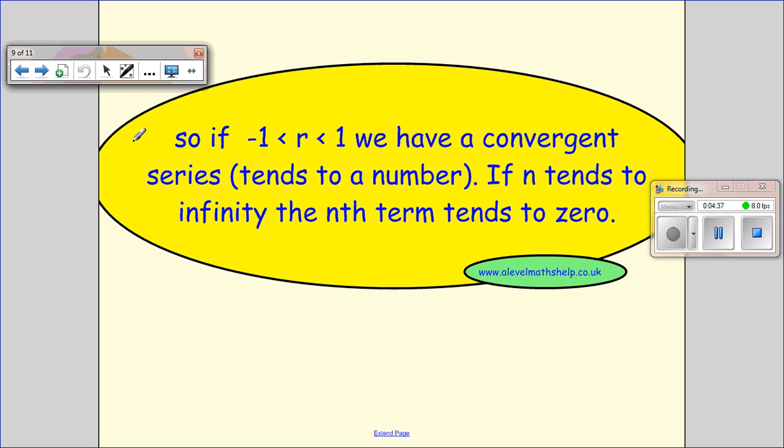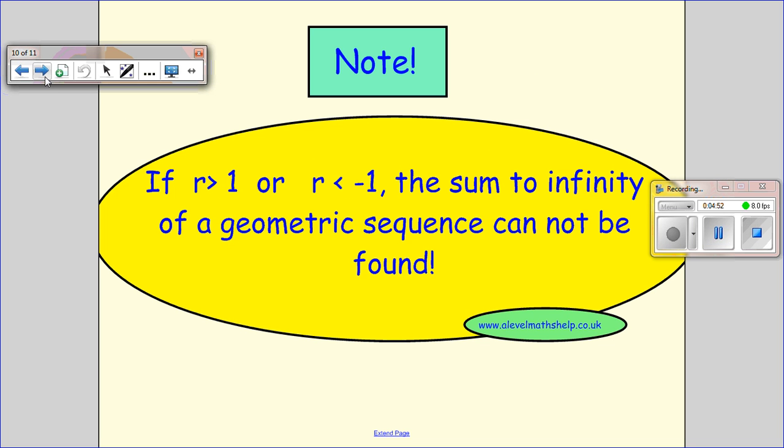So what we can say, if r is restricted to being between minus 1 and 1, we have a convergent series because it tends to a number. Because as n tends to infinity, the nth term tends to 0. So we do actually have an answer.